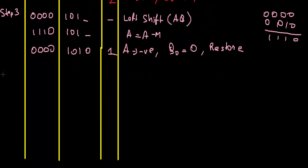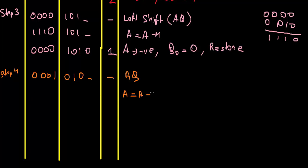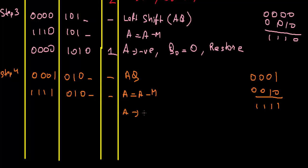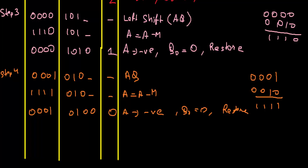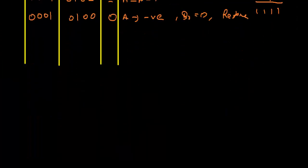We write back what we had before the subtraction in Step 3 and reduce N to 1. Step 4: We perform the left shift of A and Q, giving 0 1 0 and a dash position. We perform A equals A minus M; the result is 1 1 1 1 — all ones. The sign of A is negative again, so Q0 equals 0, and we perform the restore operation, giving A = 0 0 0 0 and Q = 0 1 0 0. N is now 0.